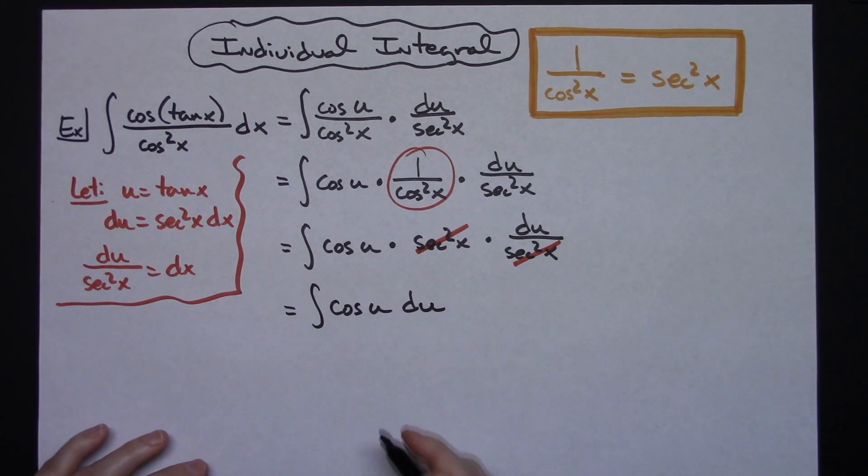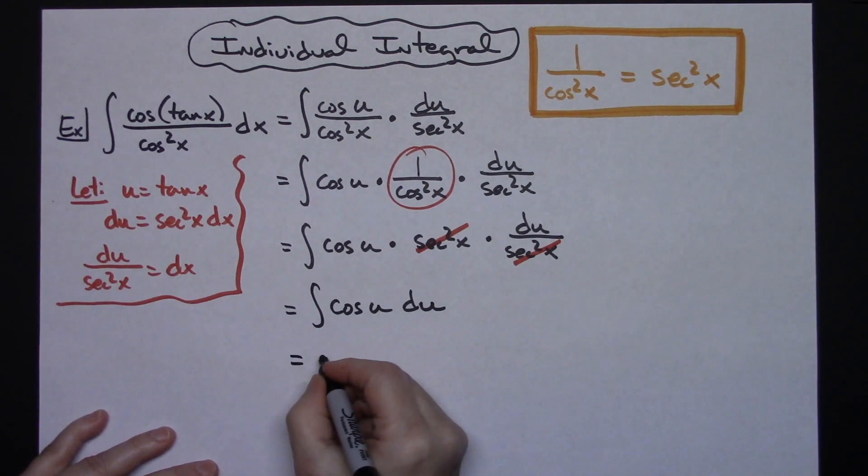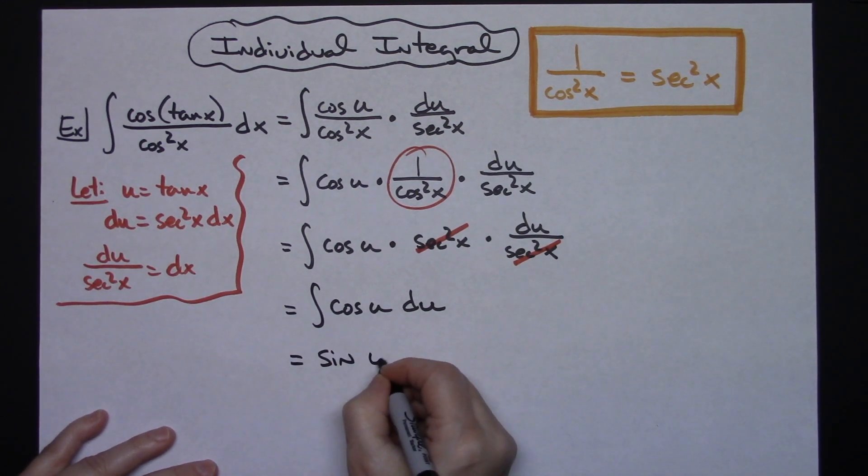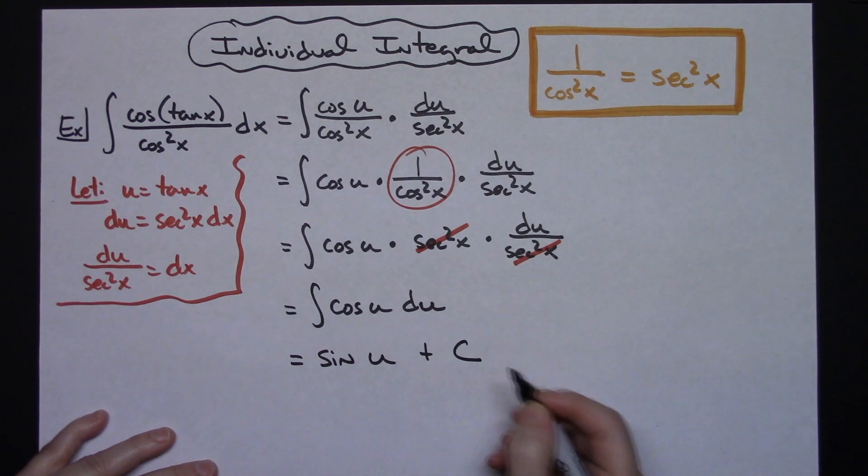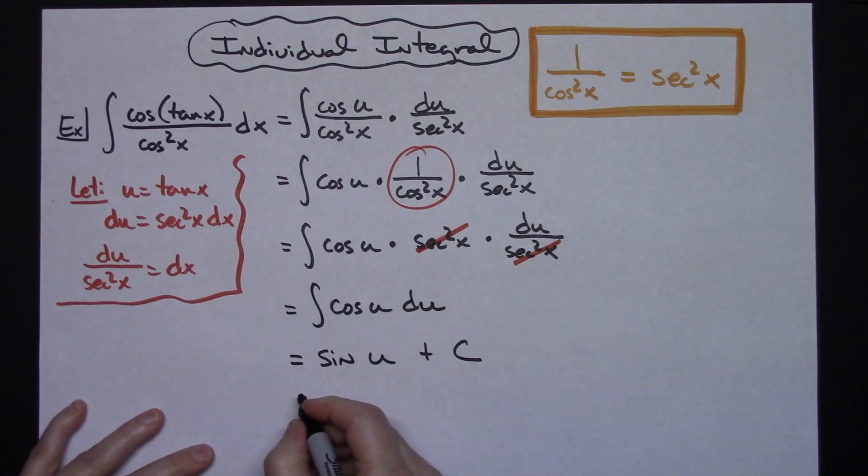When you integrate cosine, you get sine, so we're going to have sine u. I can put the plus C on because I've integrated. Now the last step is to replace what you said u was going to equal, so I'm going to have sine of tangent x plus C for a final answer.